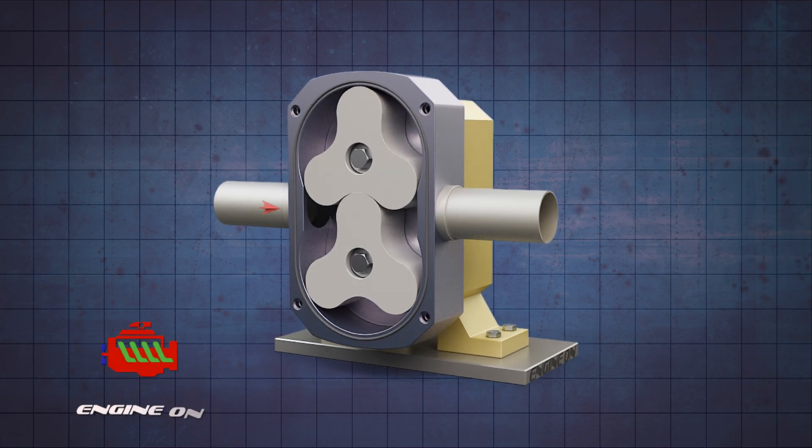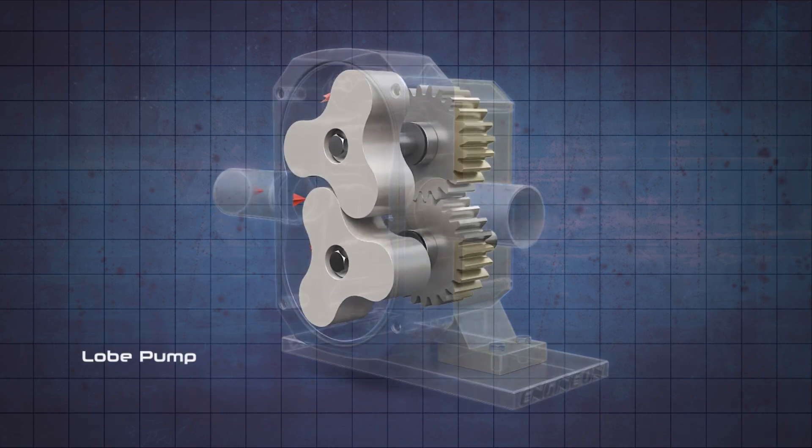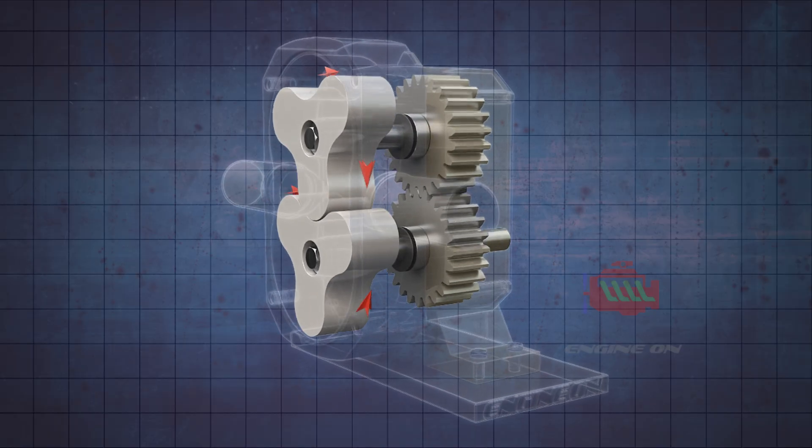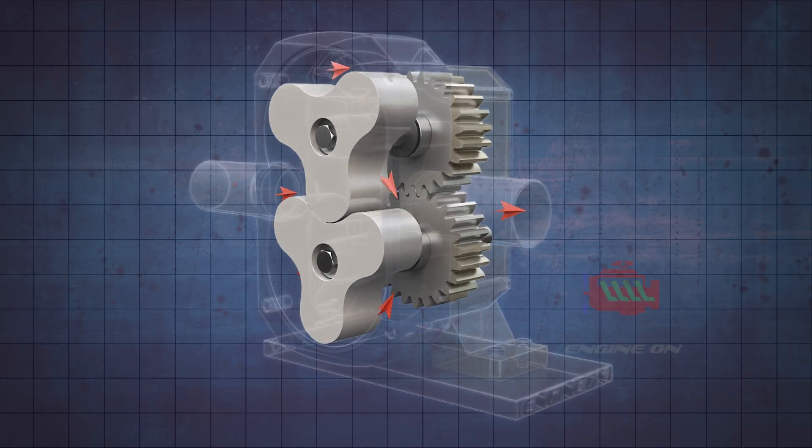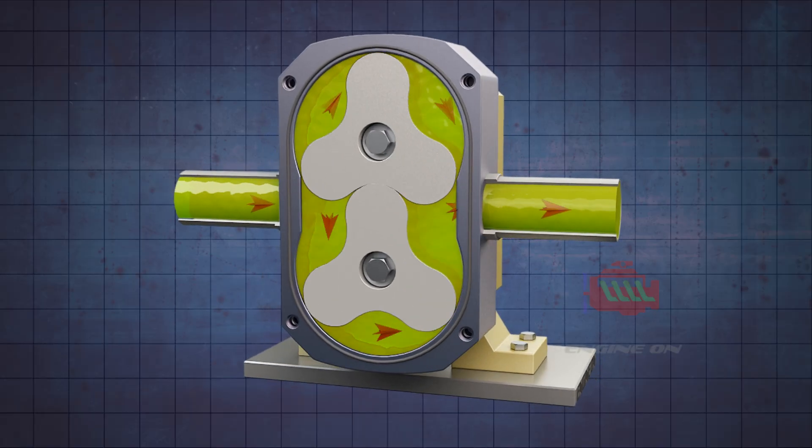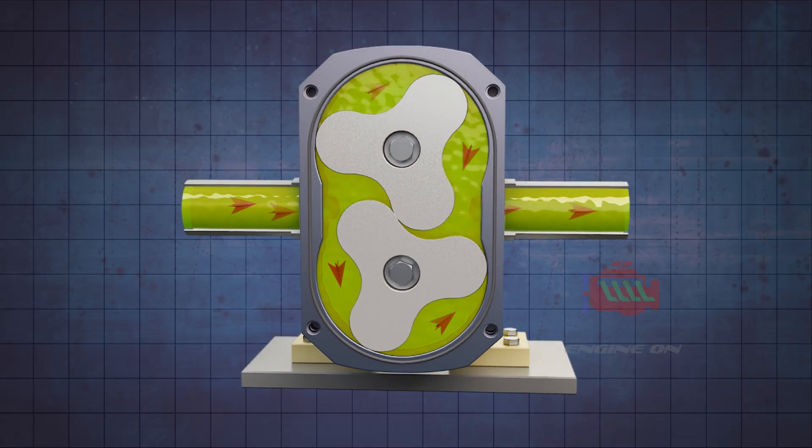A lobe pump is a type of positive displacement pump where two or more lobed rotors rotate in synchronization without contacting each other. The rotating lobes trap and transfer fluid from the pump inlet to the outlet.